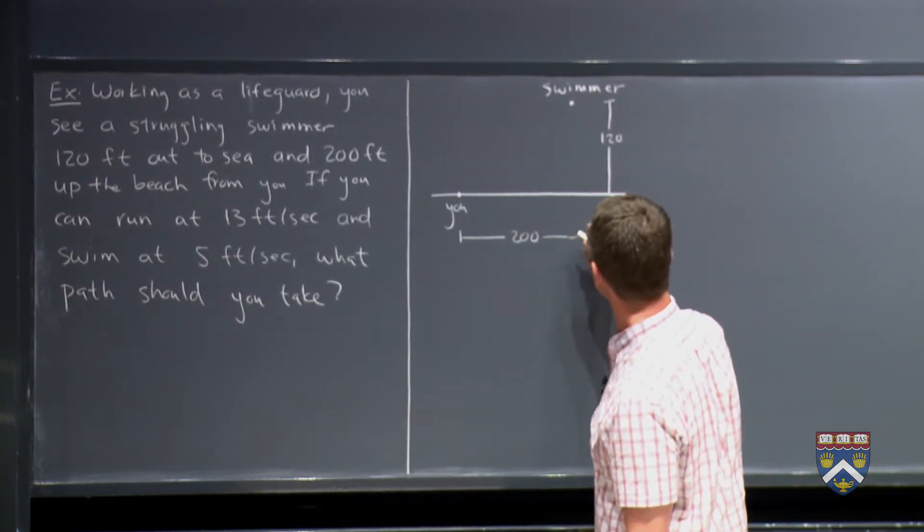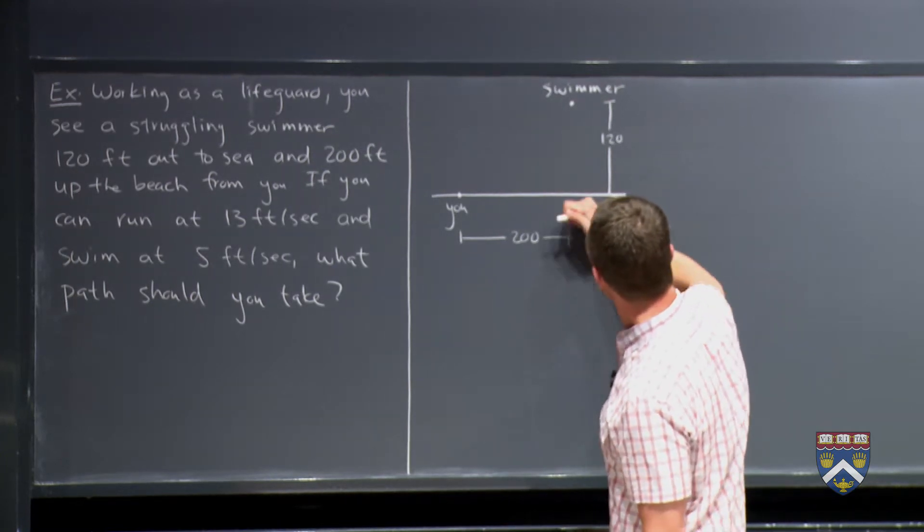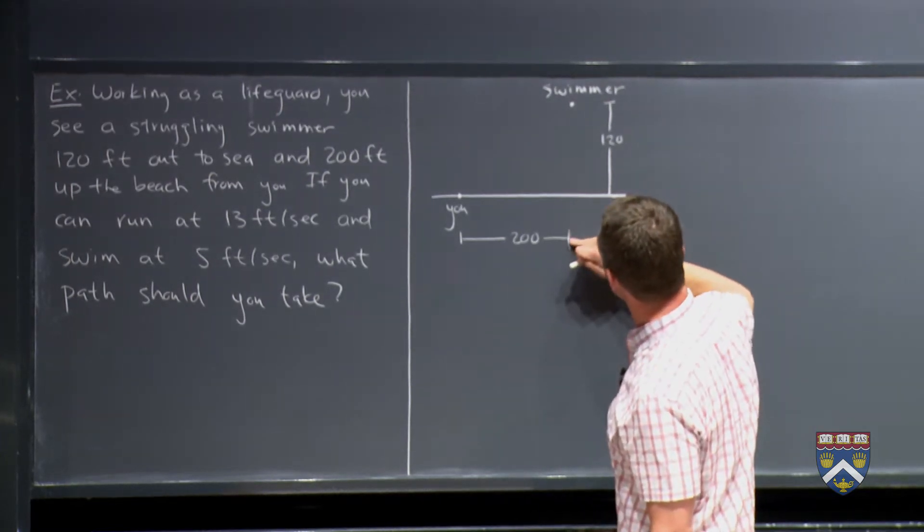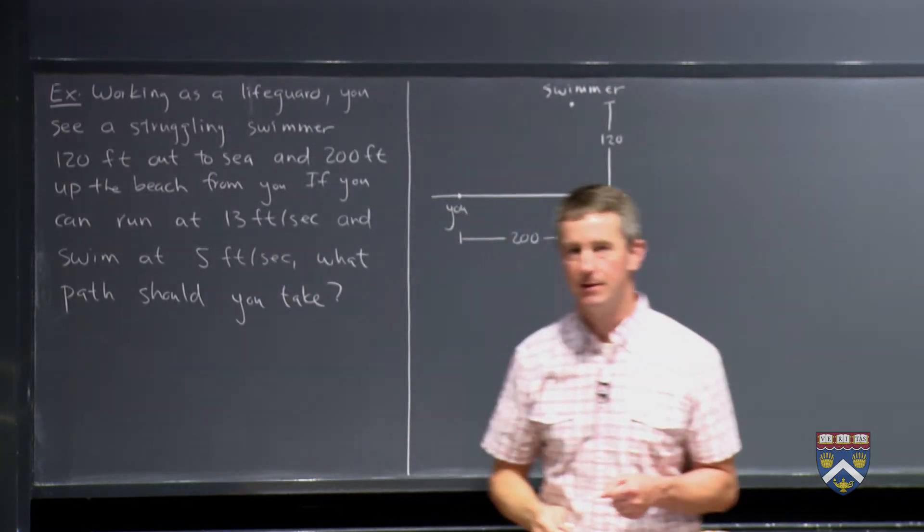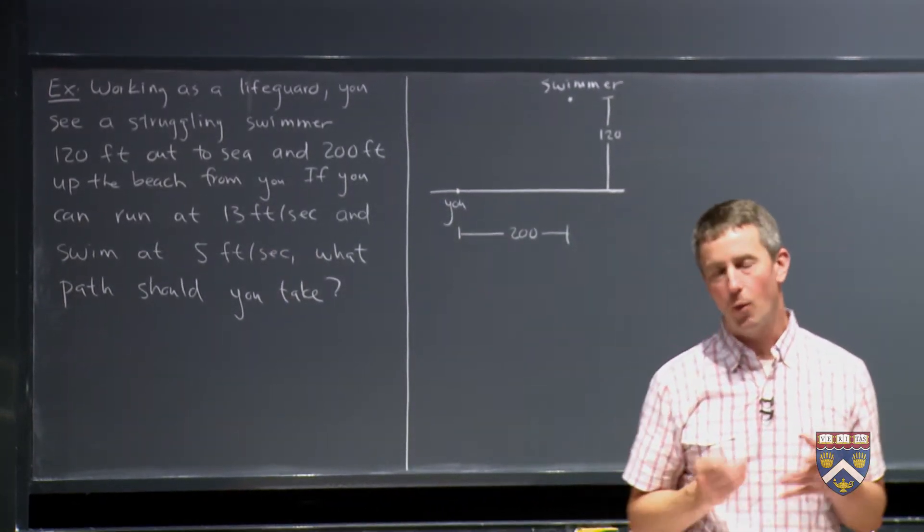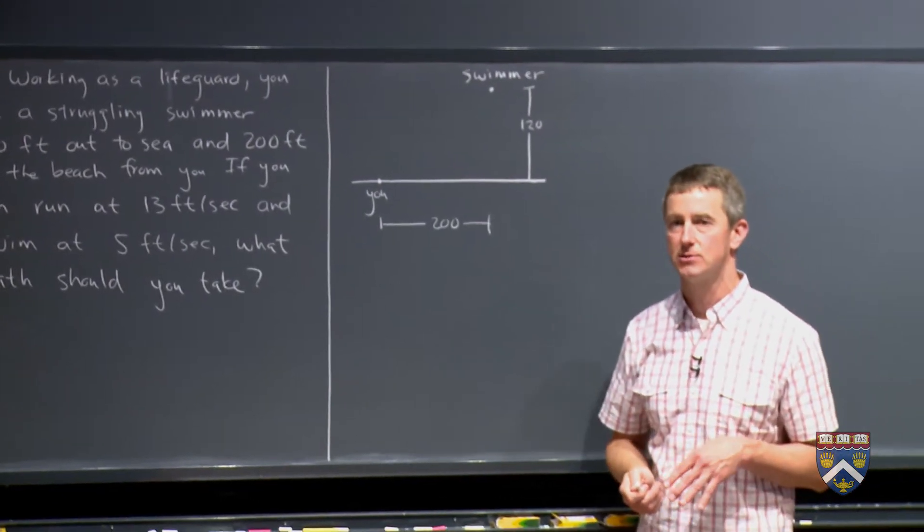The swimmer is 120 feet out there and 200 feet in this direction from you. That means that the 200 should stop here. So if you can run in the sand at 13 feet per second and you can swim in the ocean at five feet per second, what path should you take to get to this swimmer?